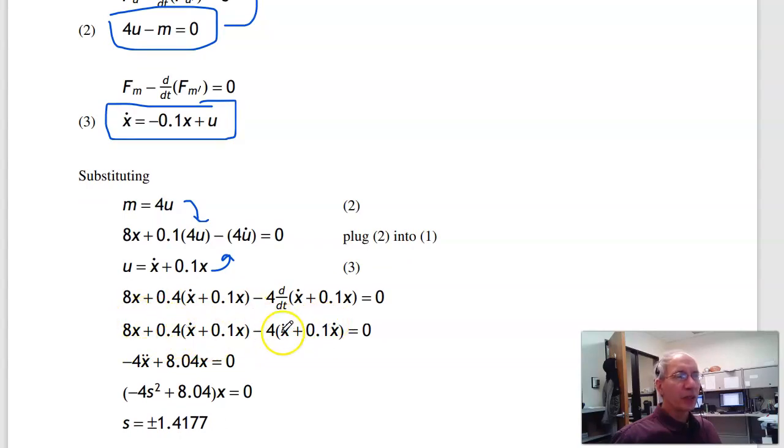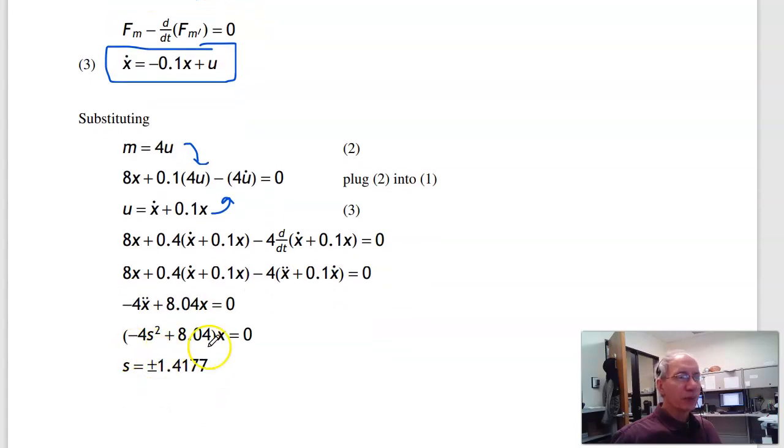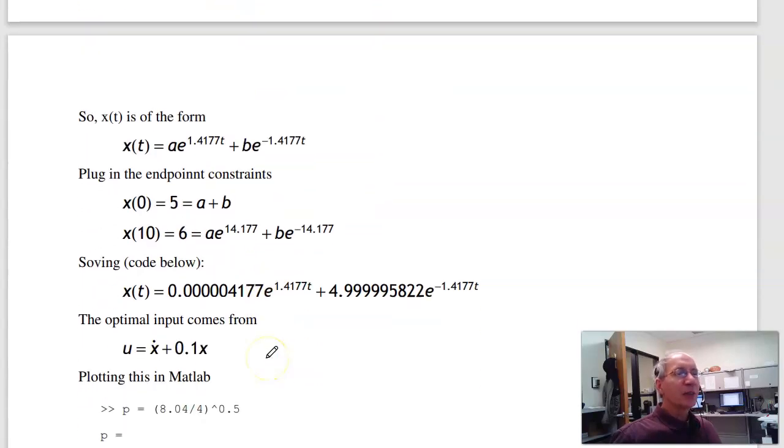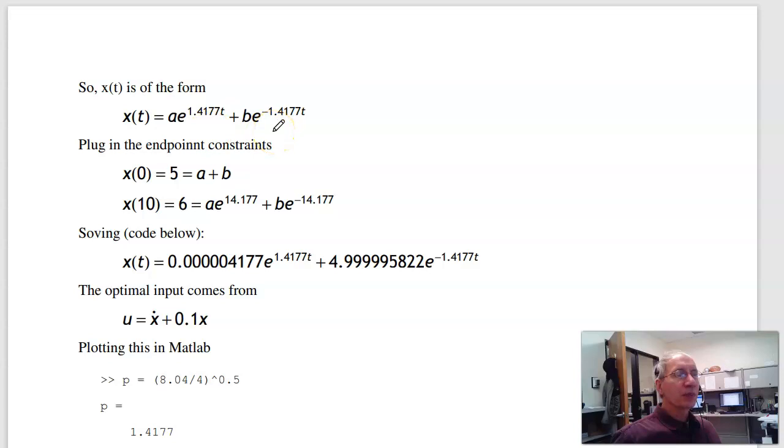Conveniently, the x_dots drop out, gives you this form. Let s be derivative. That has to be satisfied. Solving for s, s is ±1.4177. That tells me x(t) is in this form. Plug in the two endpoints at the left endpoint, right endpoint: two equations, two unknowns, solve.